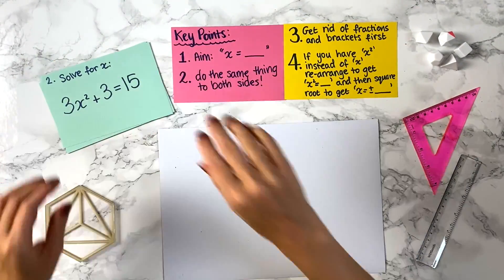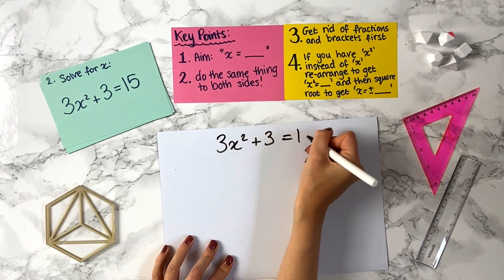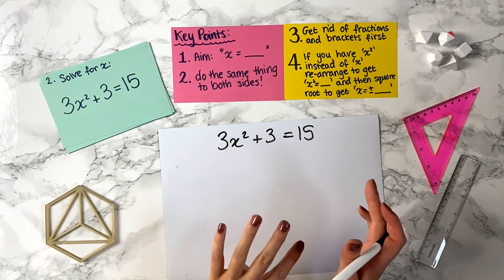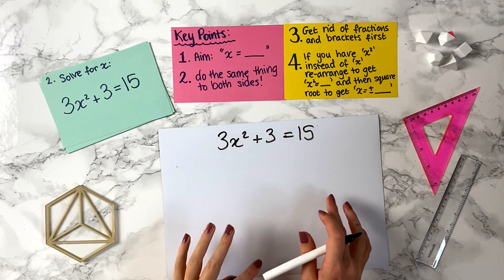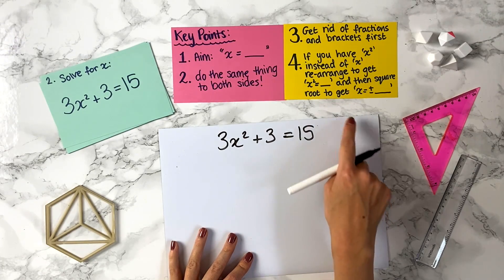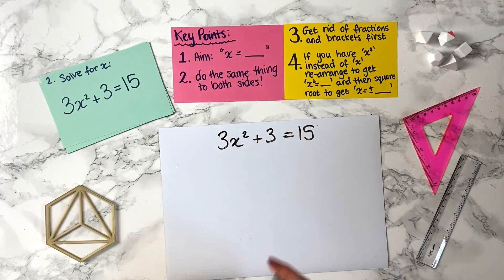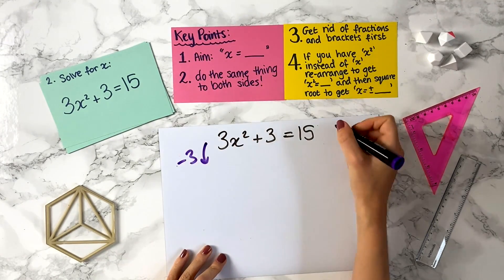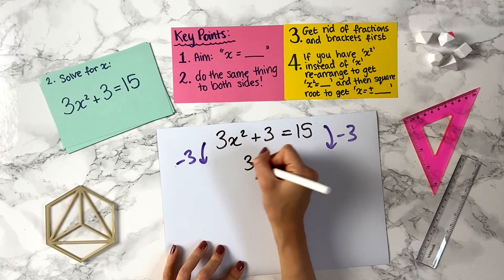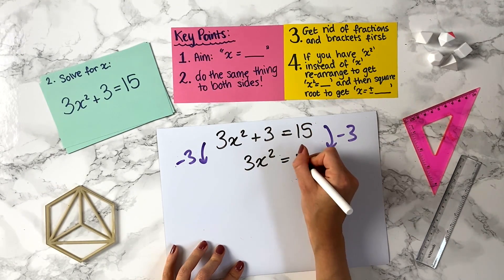Question 2: solve for x — 3x squared plus 3 equals 15. Again we have an x squared, so we want x squared on its own. We keep all x squared terms on the left hand side and move numbers to the right. To get rid of the 3, we minus 3 from both sides: 3x squared plus 3 minus 3 gives us 3x squared, and 15 minus 3 gives us 12.